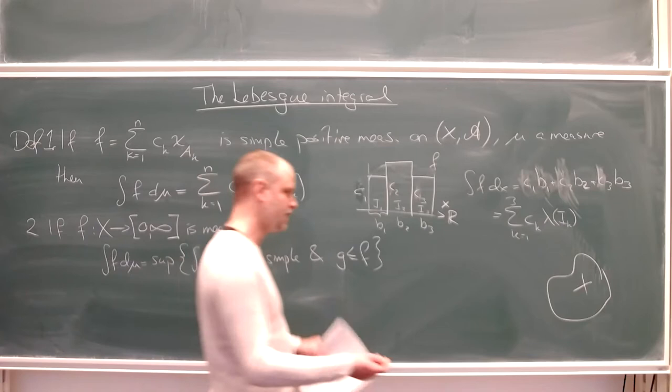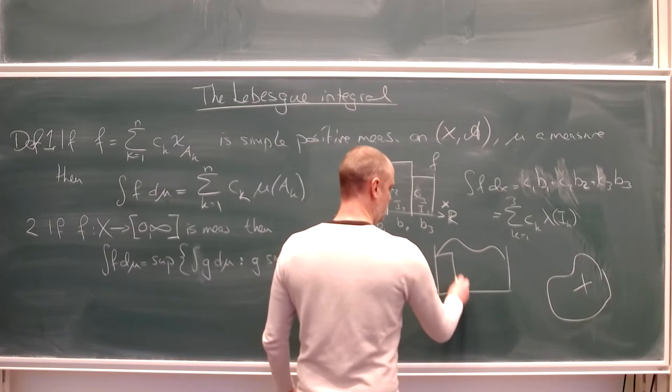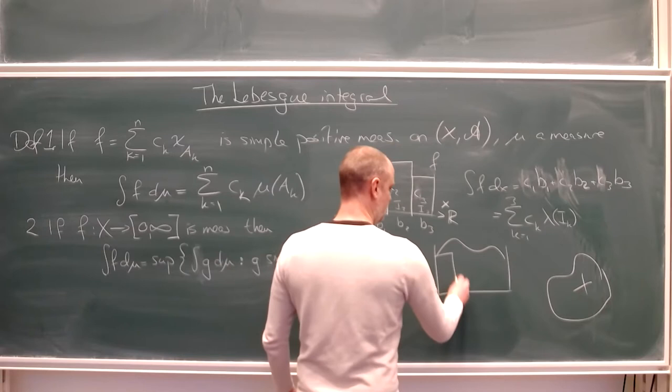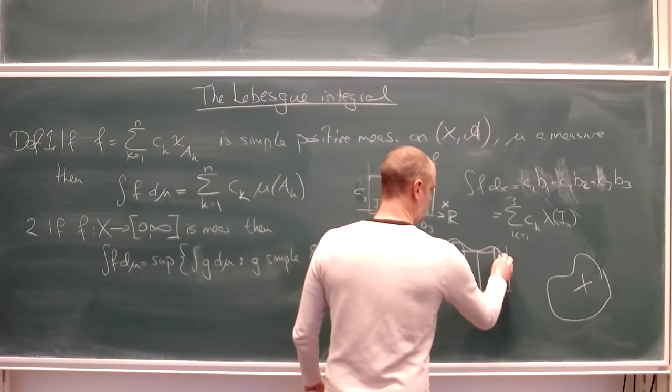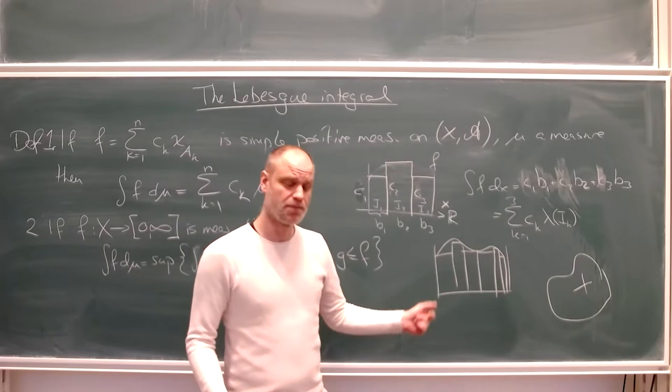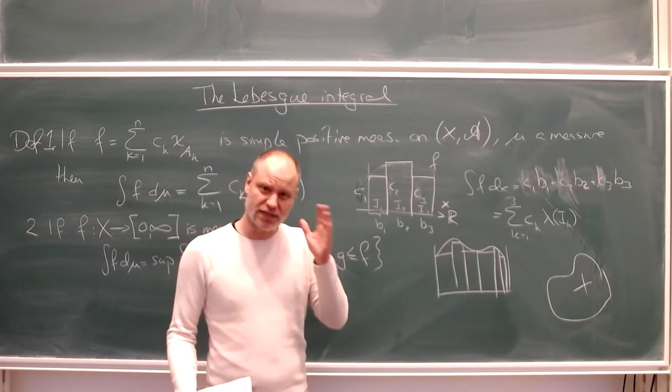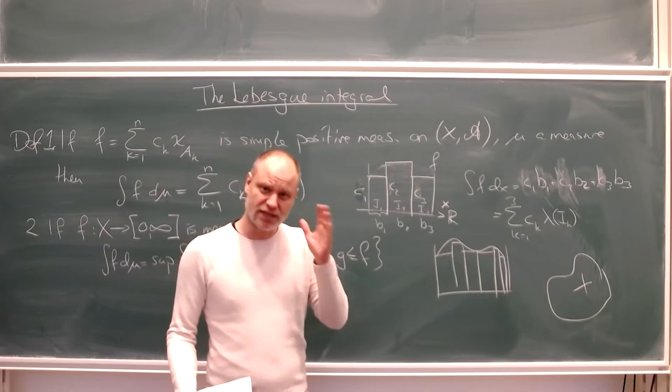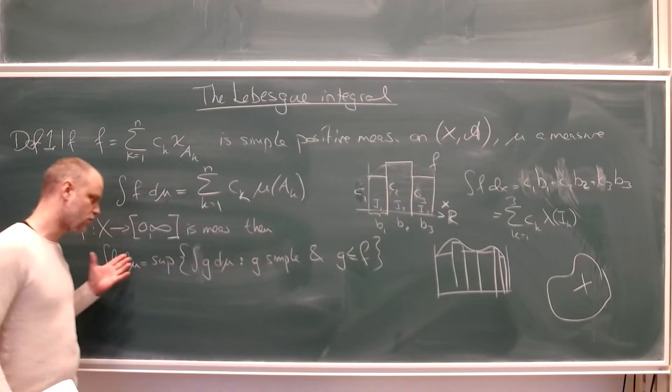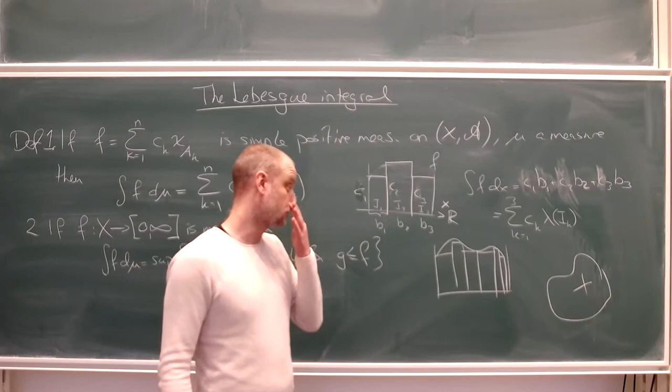The natural definition is the same idea as in the Riemann integral. In the Riemann, we looked at piecewise constant functions below a given function, took the supremum of all such functions, and then required that the infimum from above gave the same value. The key difference here is that we just work with the supremum — we don't care about the infimum. So the integral always exists, as long as the function is non-negative and measurable.